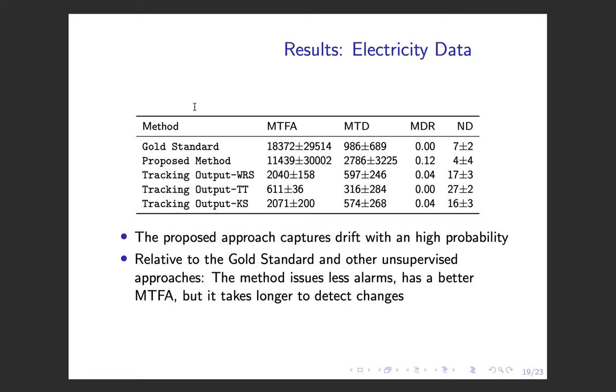This table shows the results for the electricity dataset. The proposed method has a missed detection rate of 0.12, which represents a probability of detection of 88%. This is worse than the remaining models. But we can also see that our model is generally more reliable. We take longer to detect the drift, but we launch considerably fewer false alarms when compared to the other unsupervised approaches.